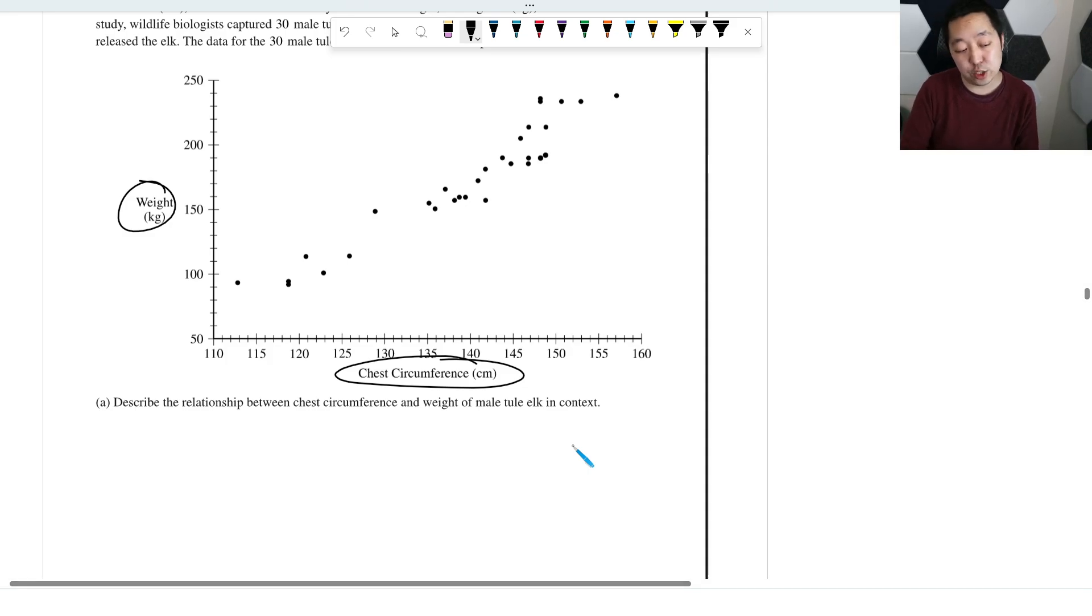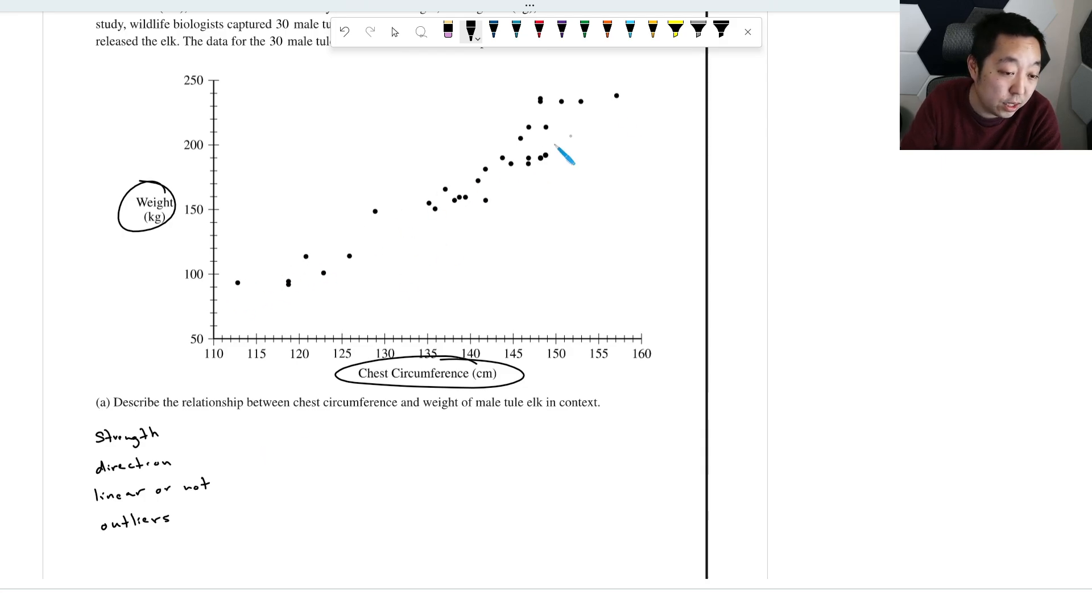Okay, so this is a linear regression. How do we want to describe it? We want to talk about the strength of the association. We want to talk about the direction, positive or negative. We want to talk about the shape, is it linear or not? And we're talking about any potential outliers. So here we would say it looks pretty linear, a pretty strong relationship, and it's positive. Positive means as one goes up, the other goes up. So there is a strong positive linear relationship between chest circumference and weight.